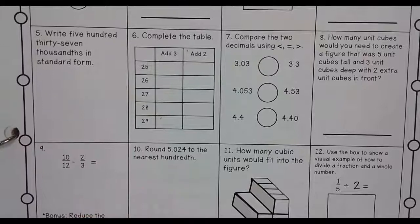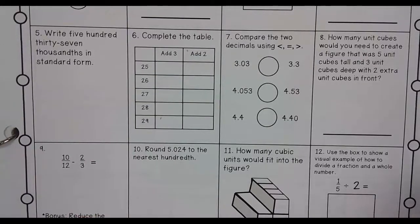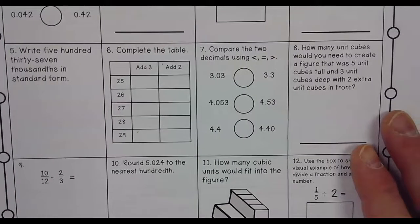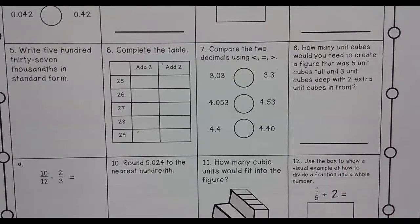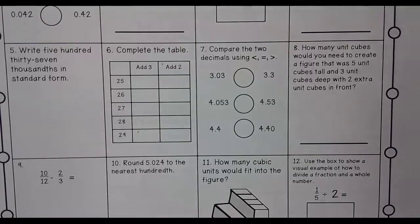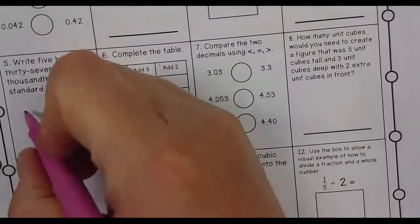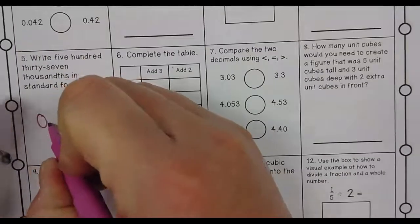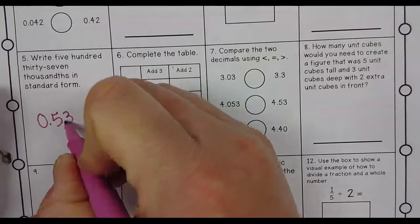Write 537 thousandths in standard form. 537 thousandths in standard form. 0.537. Excellent.